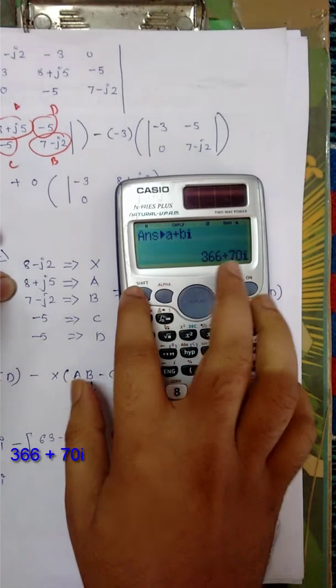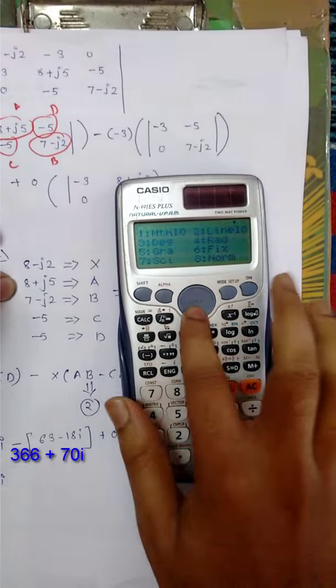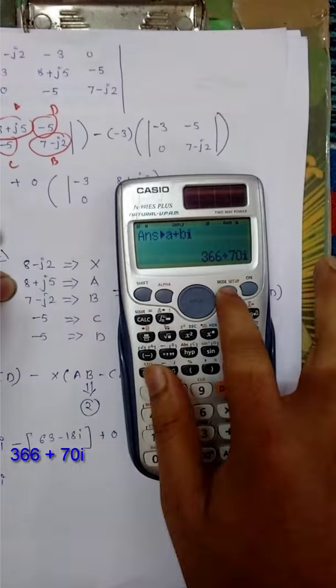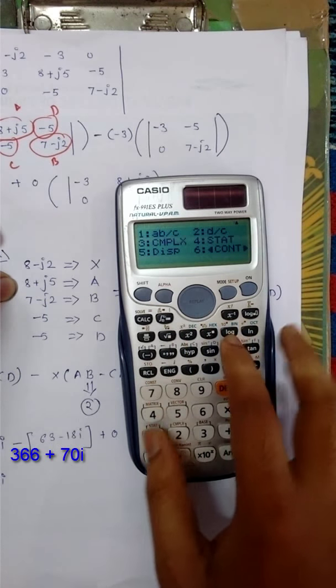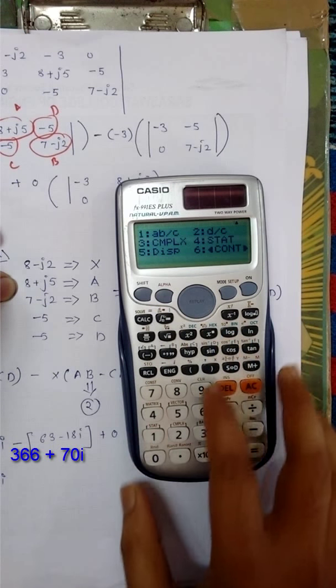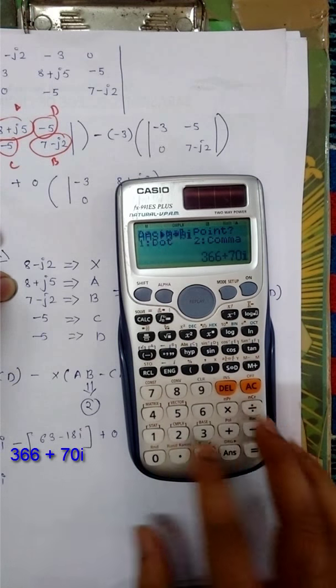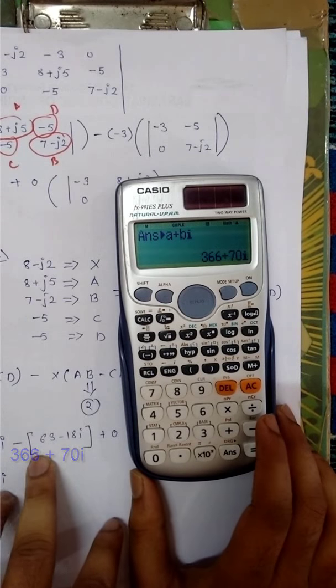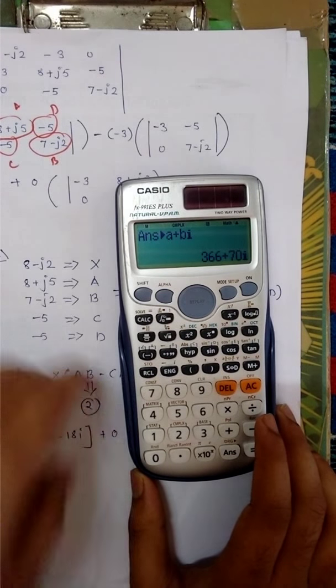Okay. I am changing this mode. 366 plus 7i. Similarly you can calculate this result.